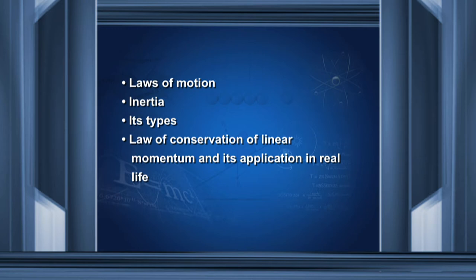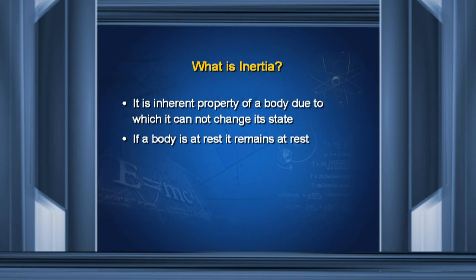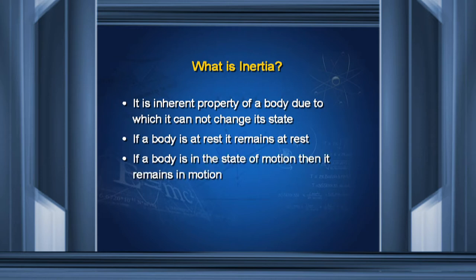We will start from inertia. Let us observe objects around us. Can this TV set in your room move on its own? Can any other object in your surroundings change its state? The answer is no. The reason behind it is inertia. Inertia is the inherent property of a body due to which it cannot change its state — if a body is at rest it remains at rest, and if the body is in motion it remains in motion.